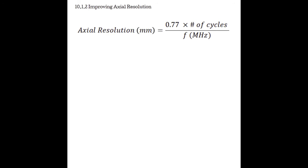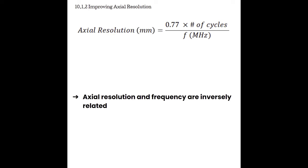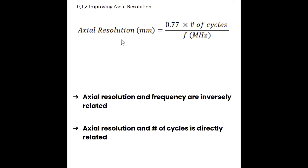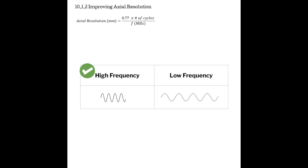By analyzing this formula, we can see that frequency and axial resolution are inversely related. Frequency is in the denominator, so as frequency increases, the numerical value of axial resolution decreases. We also see that the number of cycles is directly related to axial resolution — increasing the number of cycles increases the numerical value of axial resolution. Remember, increased or higher numerical values are bad for axial resolution. We want small numbers. So while we don't have a knob to improve axial resolution, we can choose high-frequency transducers.